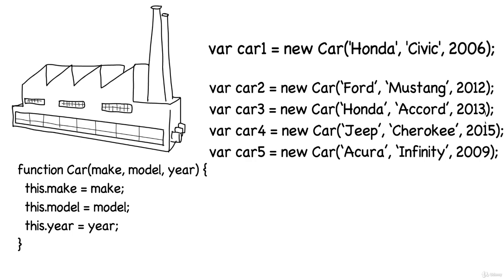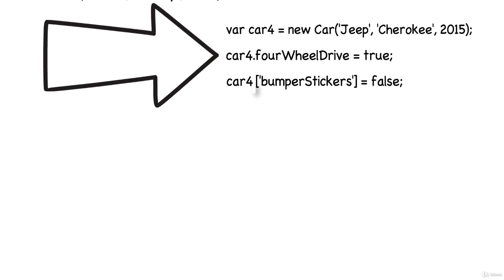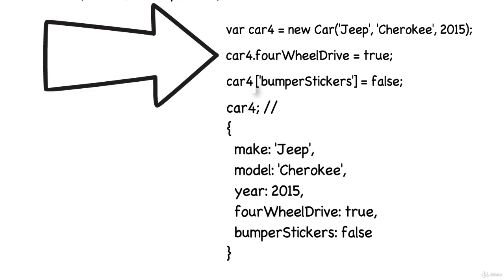Once we have created our new objects, we can add and access them the same way as any other object. We could look at car4, the Jeep Cherokee. And we might want to add a few features. We could give it 4WD with dot notation. car4.4WD equals the boolean true. We could give it a boolean as to whether it has bumper stickers or not. And in this case, we could use bracket notation to do this. There you go. You have moved from making cars one at a time to becoming a car factory.